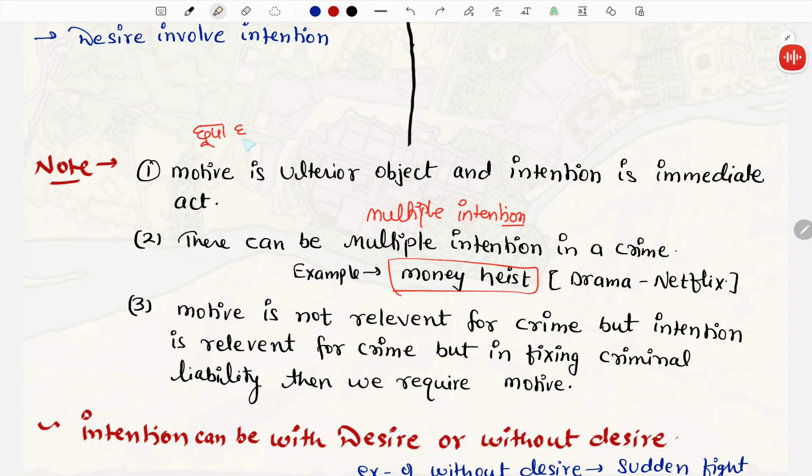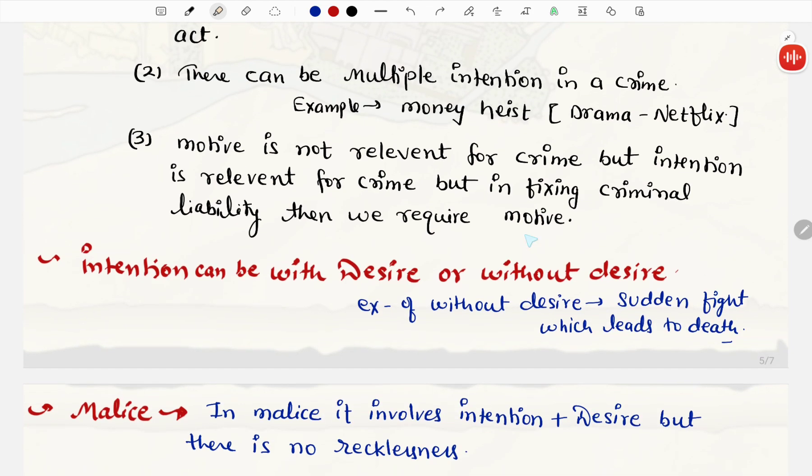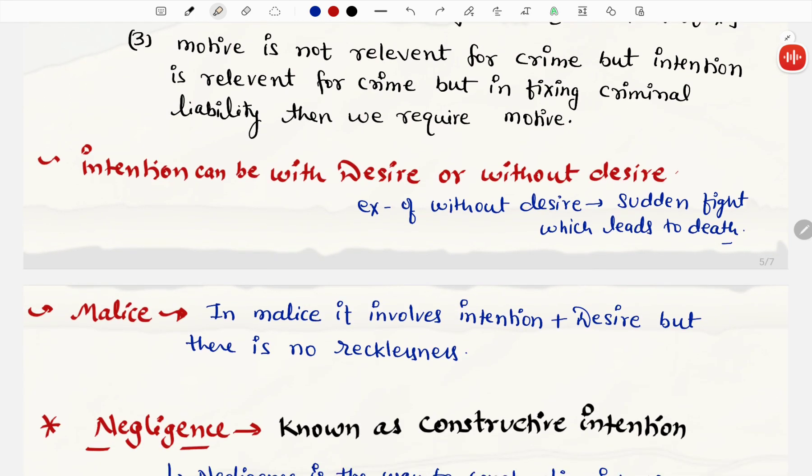Third point, motive is not relevant for crime, but intention is relevant for crime. But in fixing criminal liability, then we require motive. Motive ki zarurat kahan pe padti hai? Jab hame criminal liability fix karni ho. Last lecture mein humne padha tha, motive use karne hai, substantial differentiate karne ke liye. Evidence ko understand karne ke liye bhi motive ki zarurat hai. Next, humne padha tha, intention ke andar desire hoti hai. Uska ek exception bhi hai, intention can be with desire, or without desire. Intention without desire ka example kya hua? Sudden fight, which leads to death. Jis me aapke desire nahi thi, usko maarne ki, but you have to kill that person, because of sudden fight. Intention without desire.